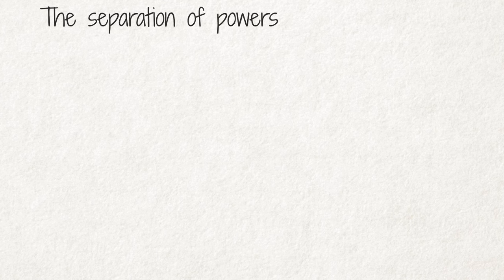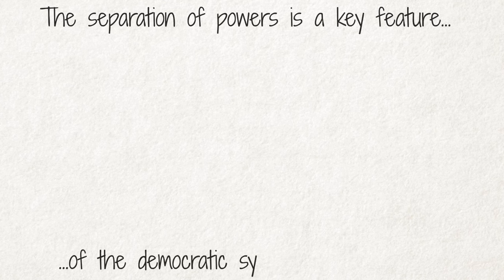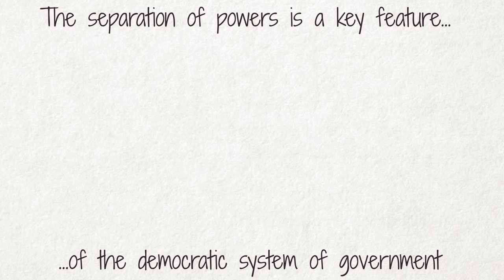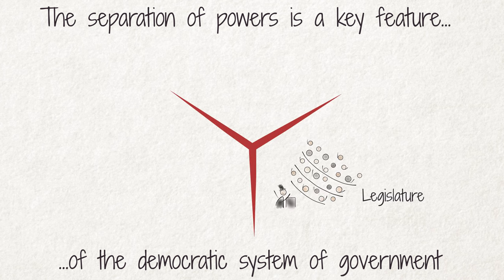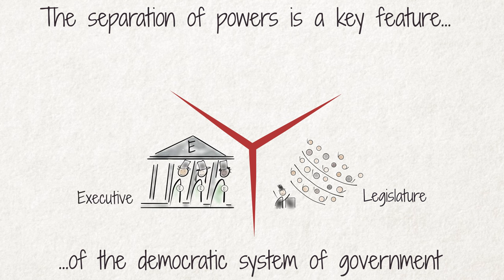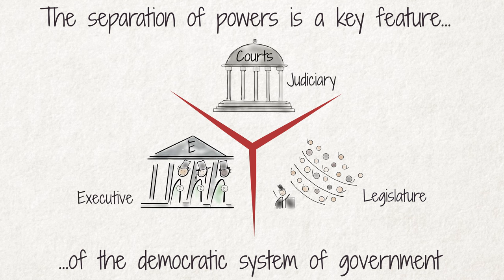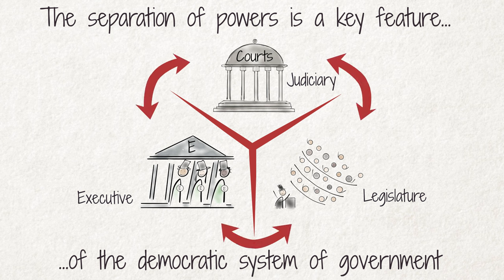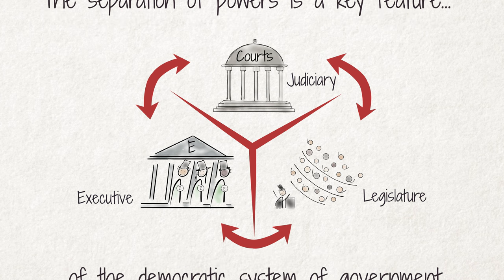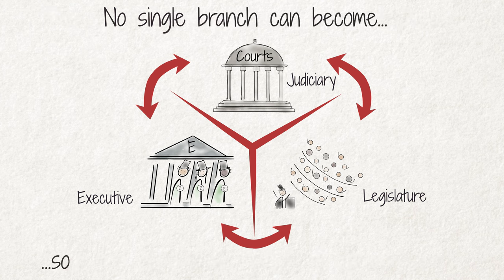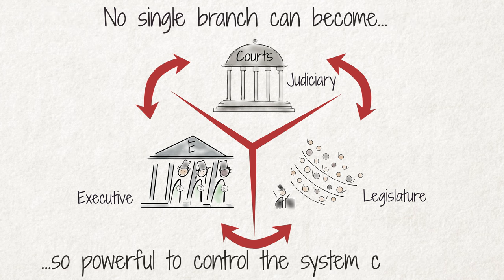The separation of powers is a key feature of a democratic system of government. This system divides the state into three branches — the legislative, executive, and judicial branch — and gives each the power to fulfill different tasks. Tasks are assigned to the different branches and their institutions in such a way that each of them can check the exercise of power by the others. As a result, no single branch can become so powerful as to control the system completely.